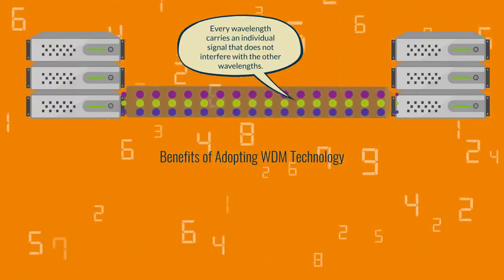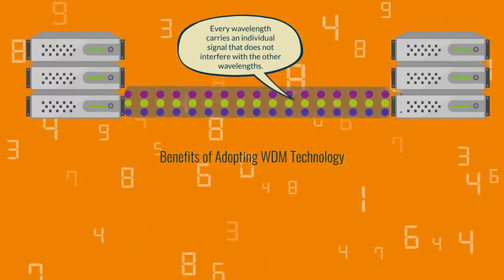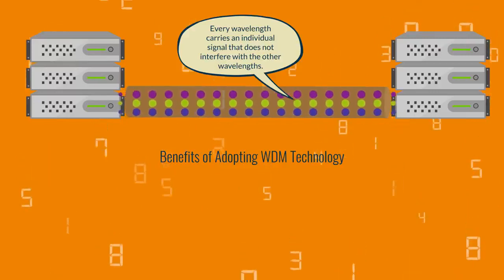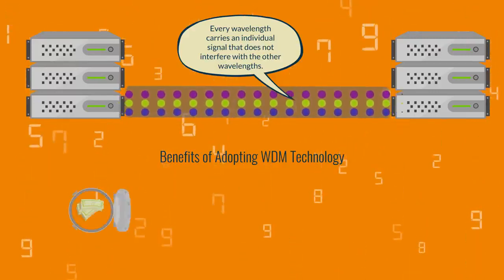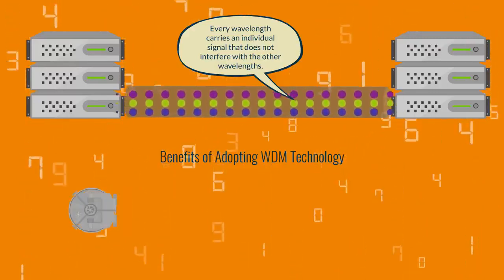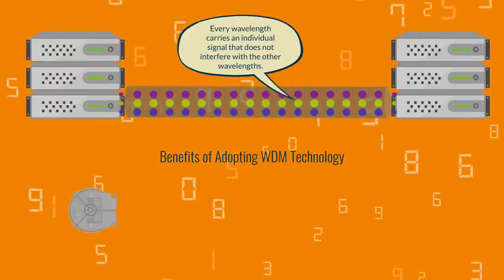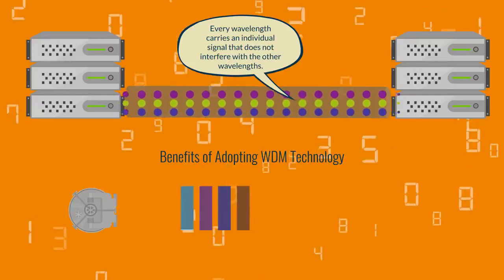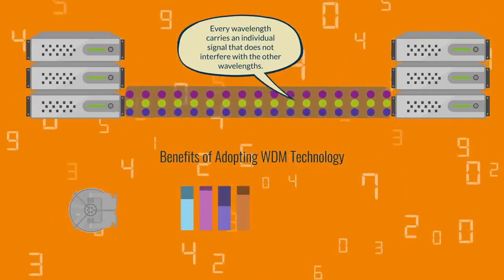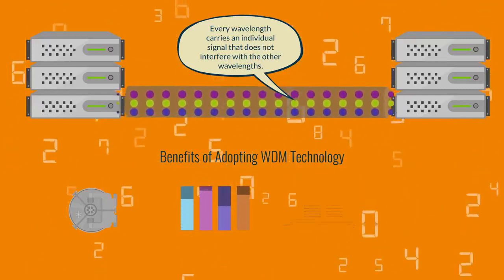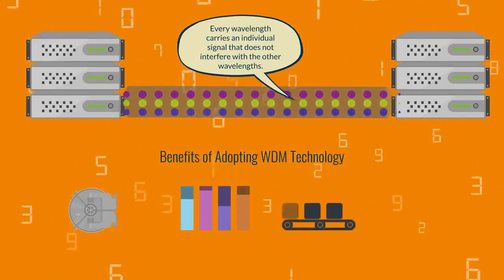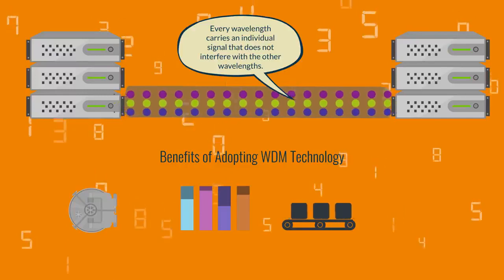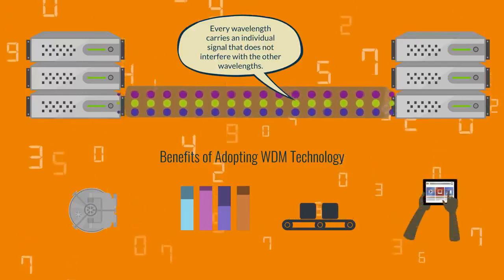There are plenty of benefits to implementing WDM technology: saving fiber resources and operation expenditures, transparent transmission, smooth expansion as the network develops, and even improved reliability of the system.